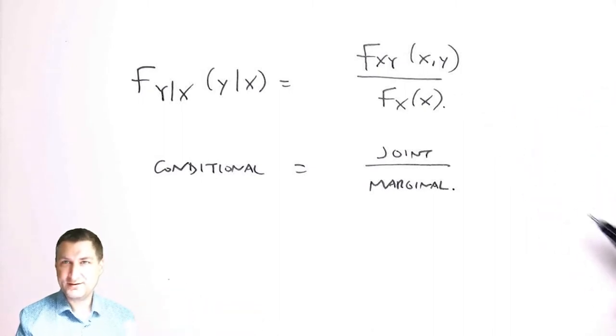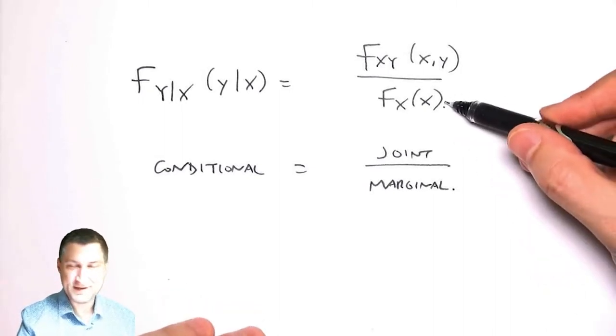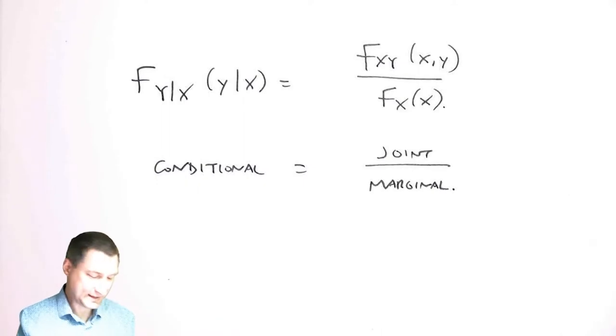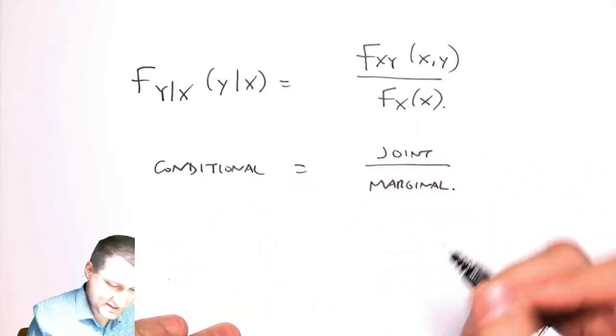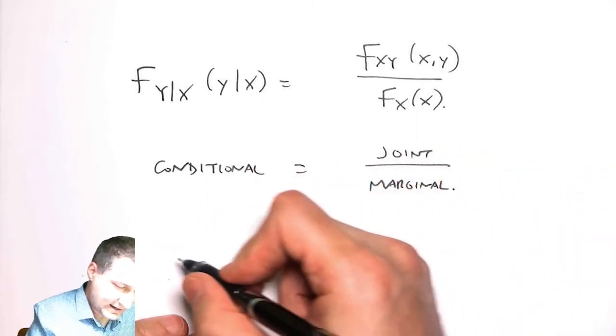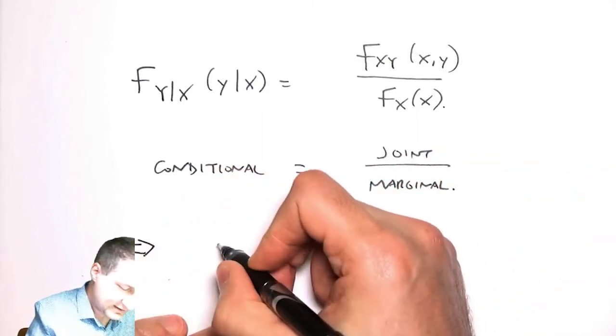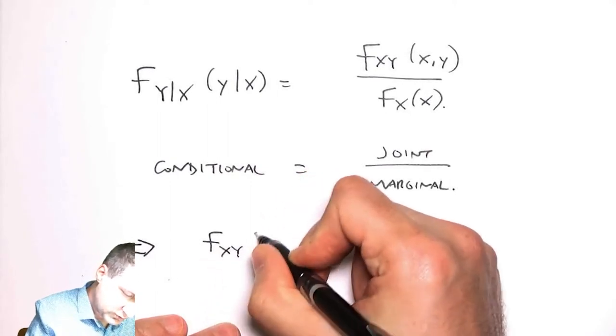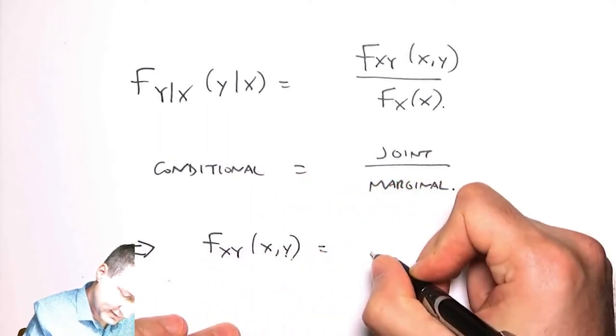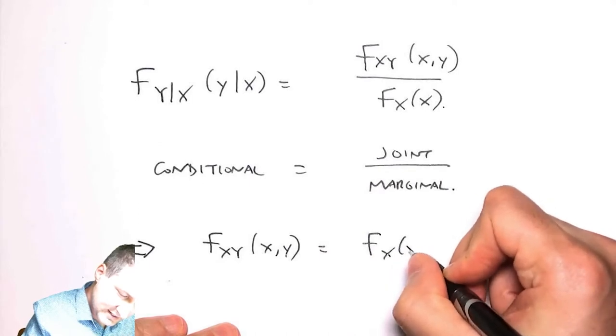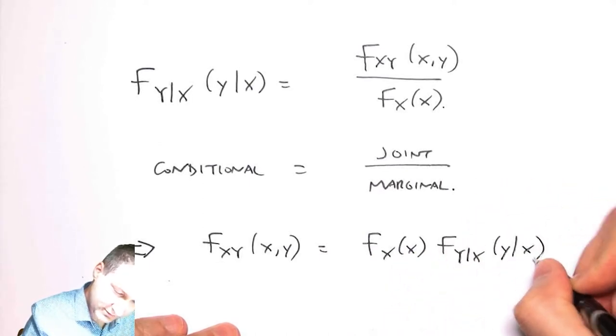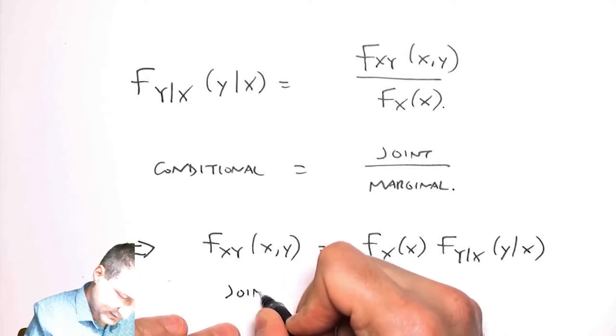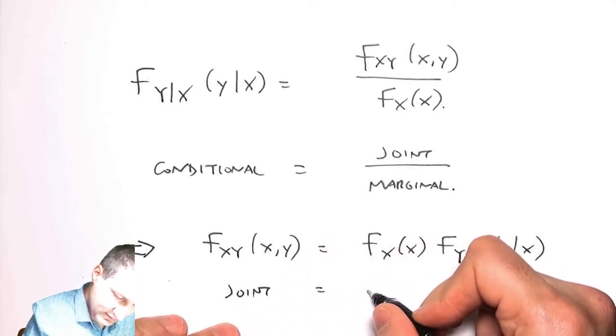This only makes sense when it's possible to get the value of X in the first place—the PDF at X has to be non-zero. This implies that the joint PDF equals the marginal times the conditional, or joint equals marginal times conditional.